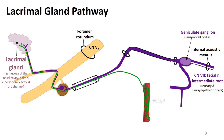The greater petrosal nerve innervates the lacrimal gland — you'll remember that from the orbit lectures — and it is a branch of the facial nerve. We see the facial nerve and its intermediate root here in white coming together through the internal acoustic meatus to enter into the temporal bone. The intermediate root contains fibers both for sensory and parasympathetics. All of the fibers will pass through the geniculate ganglion, and the sensory fibers will leave a cell body behind.